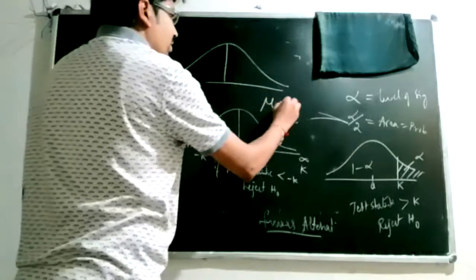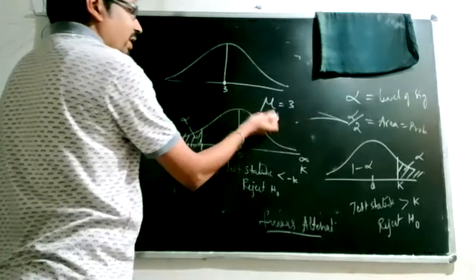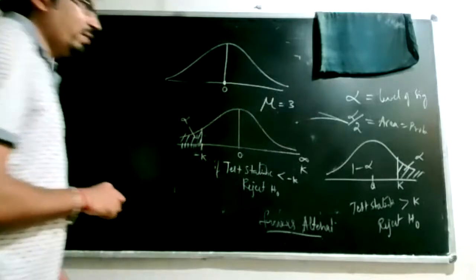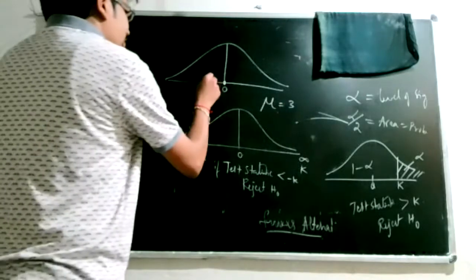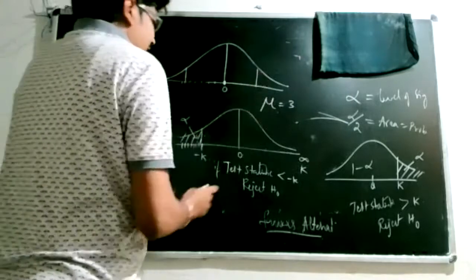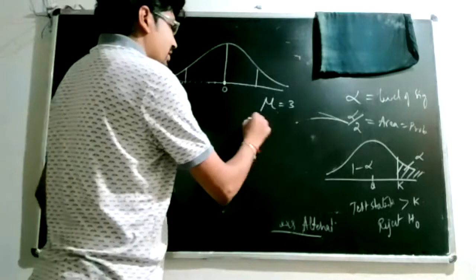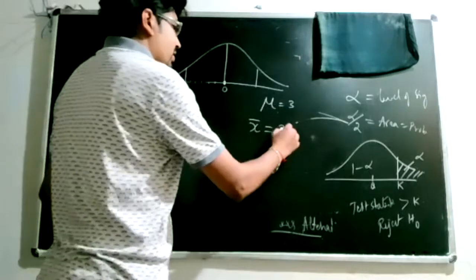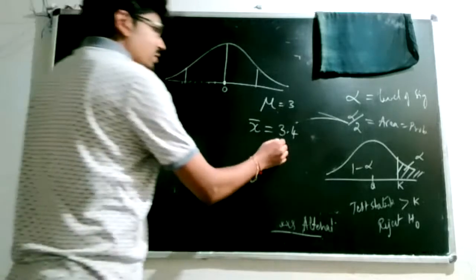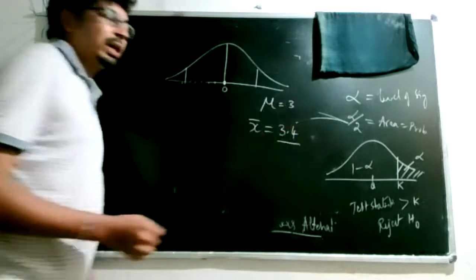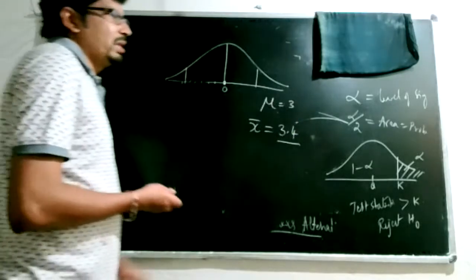Consider an example: we are testing that mu equals 3. When converted to standard normal, we get x-bar minus mu equals 0. If the sample value observed is around 3.4, we cannot immediately deny that the population mean equals 3.